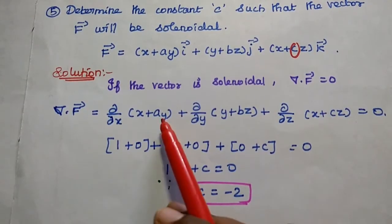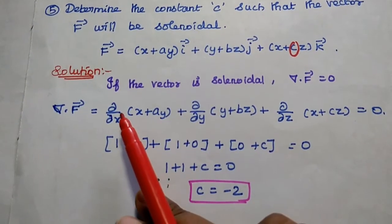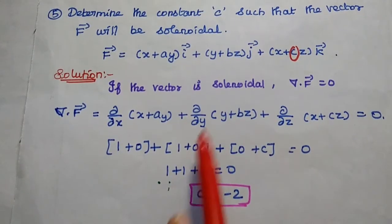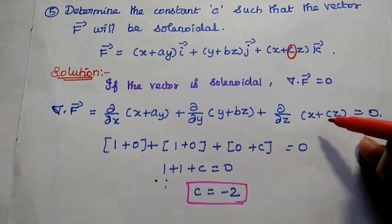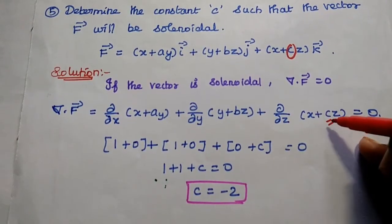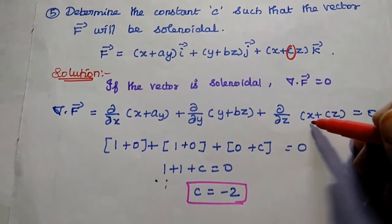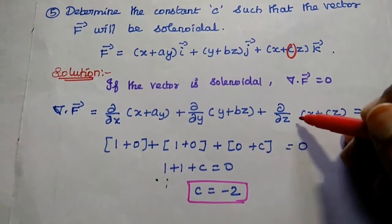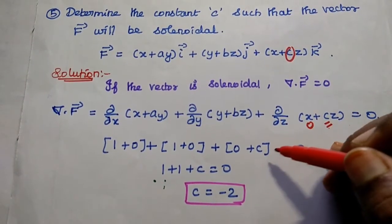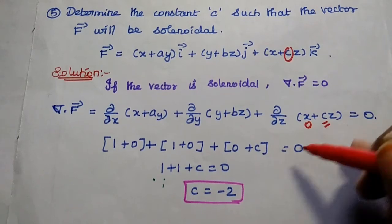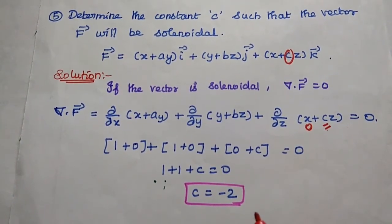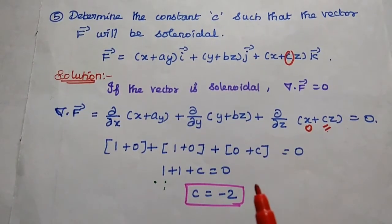Differentiating each term: ∂/∂x(x + ay) = 1, ∂/∂y(y + bz) = 1, ∂/∂z(x + cz) = c. Setting the sum equal to 0: 1 + 1 + c = 0, which gives c = −2.